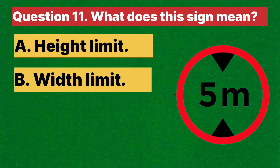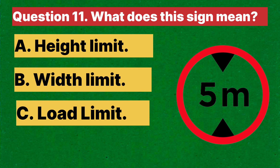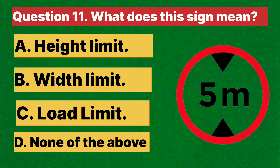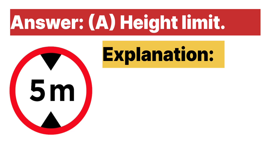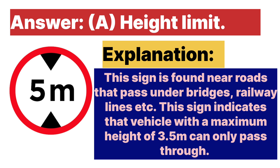Question eleven: What does this sign mean? A. Height limit. B. Width limit. Answer is A, height limit. Explanation: this sign is found near roads that pass under bridges, railway lines, etc. This sign indicates that vehicles with a maximum height of 3.5 metres can only pass through.